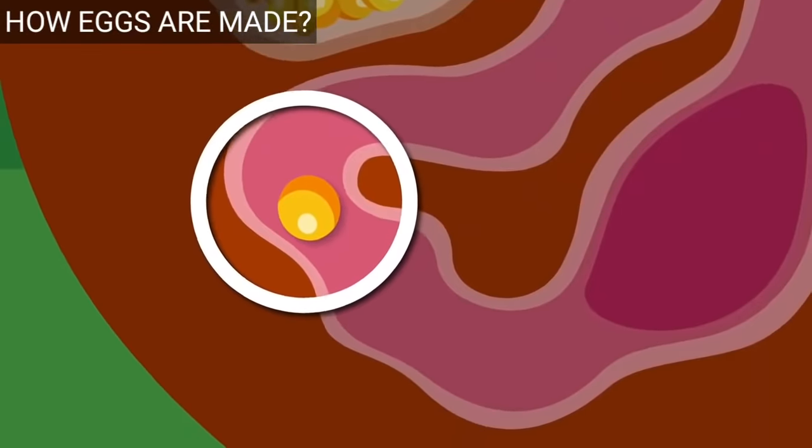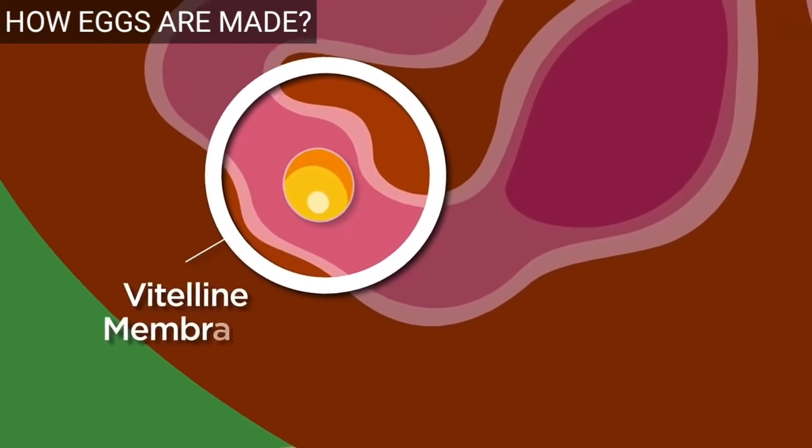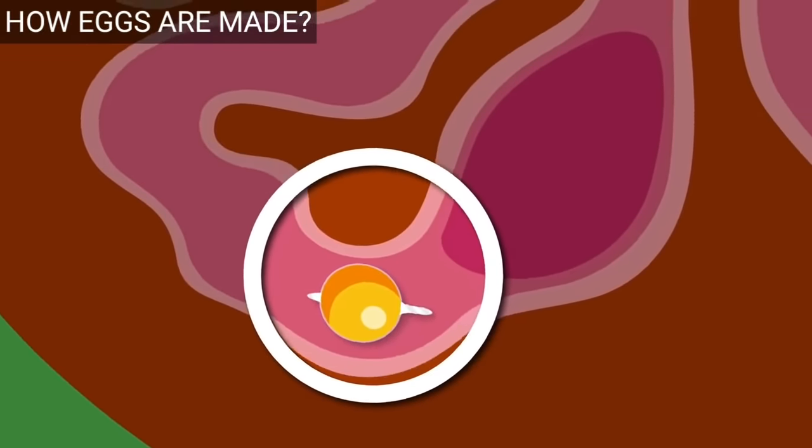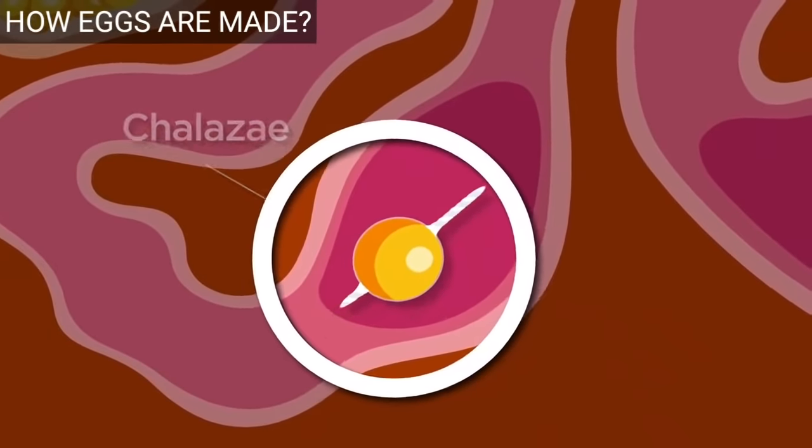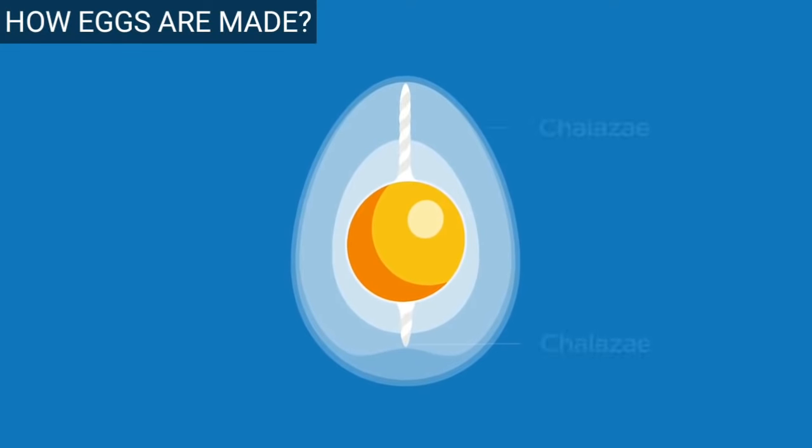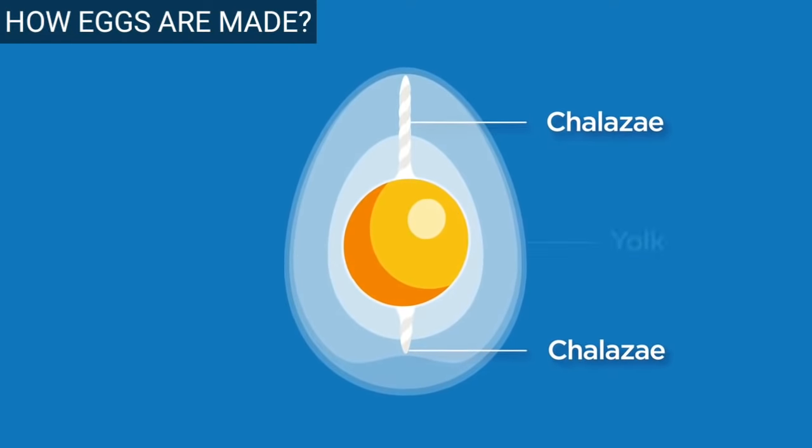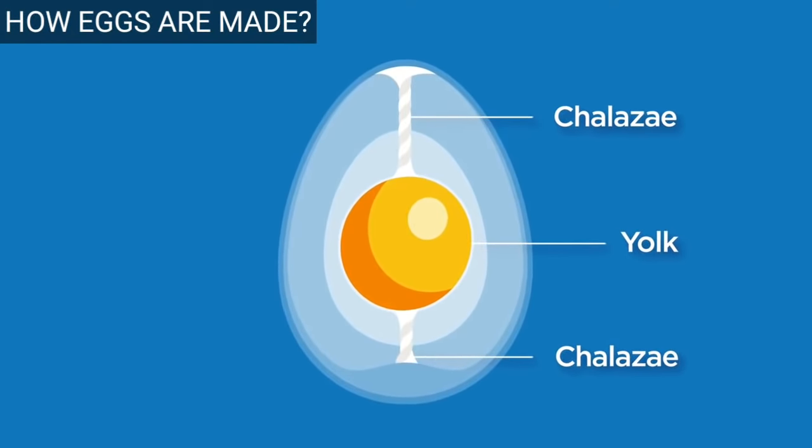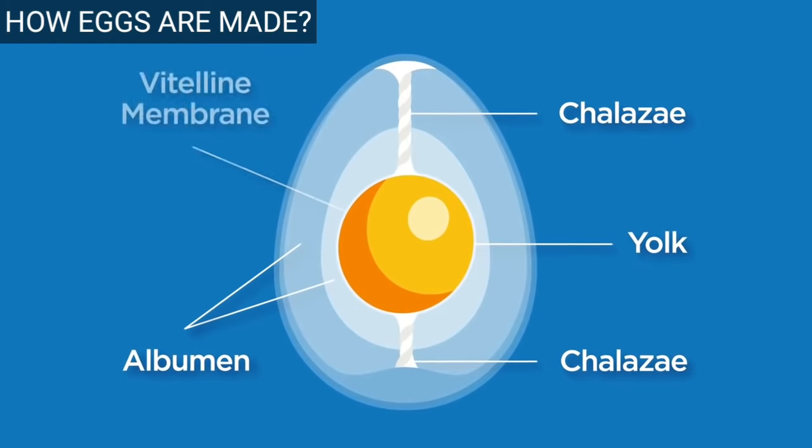The yolk is covered by the vitelline membrane. Also added are the fibrous proteins called chalazae and layers of albumin or egg white. As the egg continues, it spins, which twists the chalazae that forms strands on either end of the yolk, anchoring it in the egg white and in the center of the egg. Membranes cover the egg and protect it from bacteria.